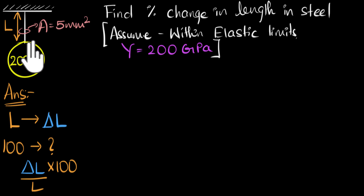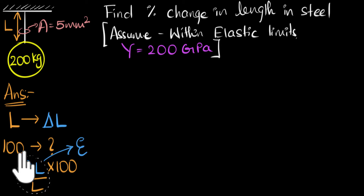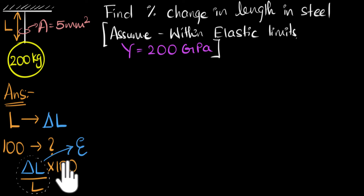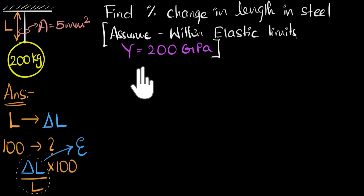Do we know what delta L is? No, we don't. Do we know what the initial length is? We don't know that either. But if you look carefully, delta L over L is the change in length per unit length, and we call this strain. We've spoken a lot about strain, stress, and Hooke's law in previous videos, so if you need a refresher go back and watch that. Our goal is really to calculate the strain, and once we do that we'll just multiply by 100.